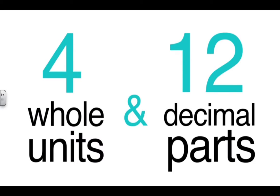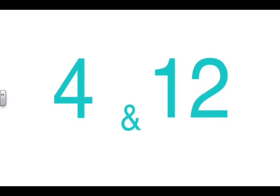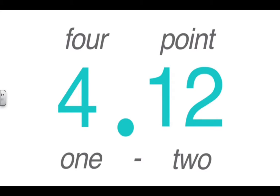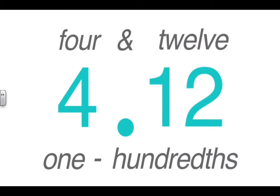If you want to write out four whole units and twelve decimal parts, it would look like this. You can read this as 4.12, or as four and twelve one hundredths.